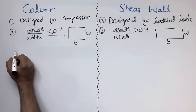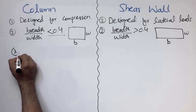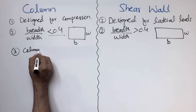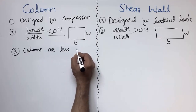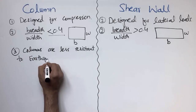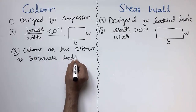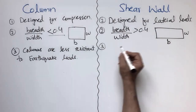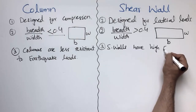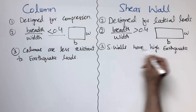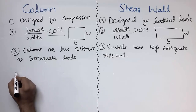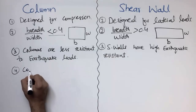The third difference is that RC columns are less resistant to earthquake loads in comparison to shear walls, while shear walls have high earthquake resistance. Shear walls are mostly designed for earthquake loads, which is why they have high earthquake resistance compared to columns.